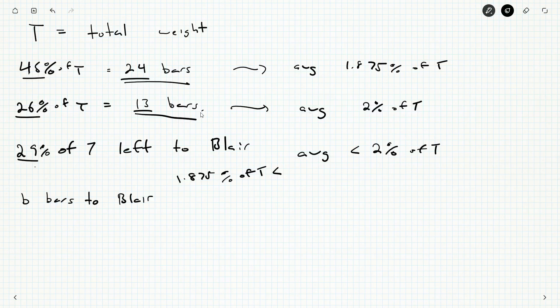So I need 29% divided by B to be greater than 1.875% and less than 2%. So if I multiply by B on both sides, I will get 15 over 8 times B needs to be less than 29, which needs to be less than 2B.